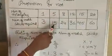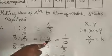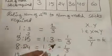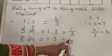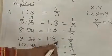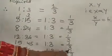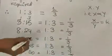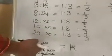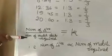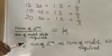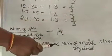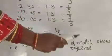The ratio of 5 is to 15 — we can simplify to get 1 by 3. In the same way, 8 is to 24 gives 1 by 3. And 12 is to 36 gives 1 by 3. 15 is to 45 gives 1 by 3. 20 is to 60 gives 1 by 3. From these ratios, we understand that the ratio of number of triangles to the number of matchsticks required is always a constant. So we can say that the number of triangles is always directly proportional to the number of matchsticks required.